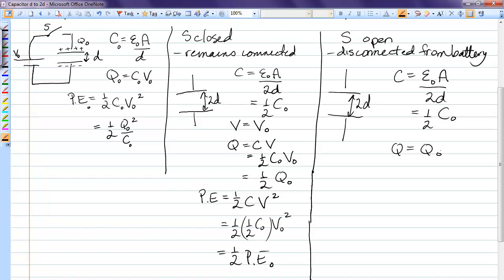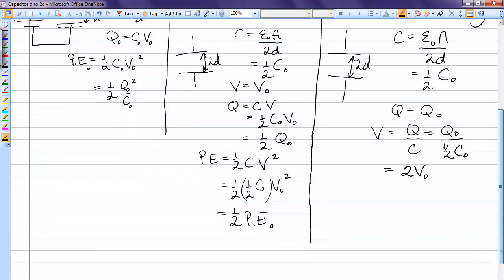The charge does not jump off the capacitor into the air, which means the voltage must change. So, Q is Cv, which means V must be Q over C. So, Q remains the same. C is now half the original, which means the voltage has doubled. So, by physically pulling apart those plates, you've actually increased the voltage on that capacitor.